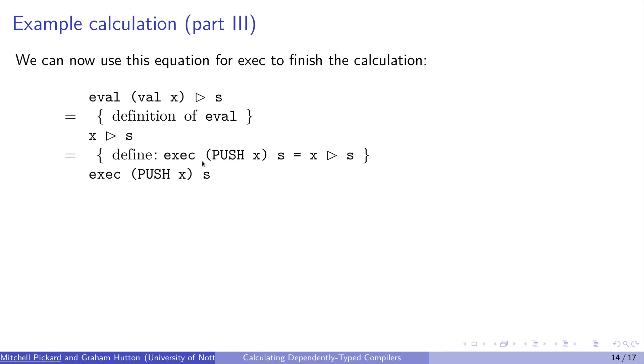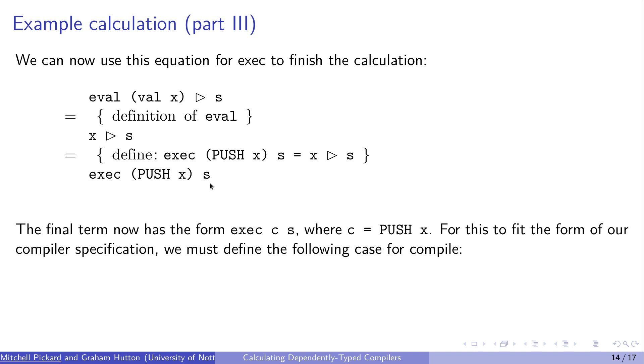Now that we have this new definition, we can use it in our calculation. And that gives us exec push x S, which is in the form that we were looking for before. Now we can create a new defining equation for compile, by setting compile of val x equal to push x in this case. And this solves this specific case.